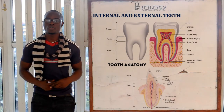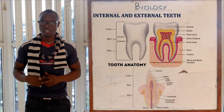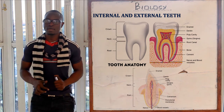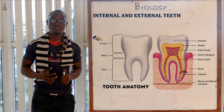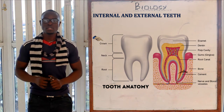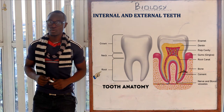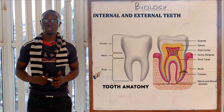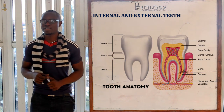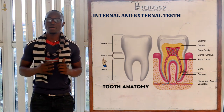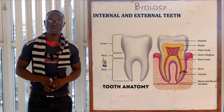Welcome to this class where today we look at the external and internal structures of the teeth. The mammalian tooth has three main zones: the crown, which is the portion above the gum; the roots, which is the portion below the gums and is mainly covered by the cement; and the neck, which is the region between the crown and the root of the teeth.